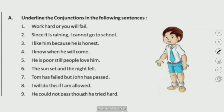Next, we have to identify and underline the different conjunctions in the following sentences. In the exam, this is a type of question. For example: 'Work hard or you will fail.' So 'or' is your conjunction. Next: 'Since it is raining, I cannot go to school.' And: 'I like him because he is honest.'